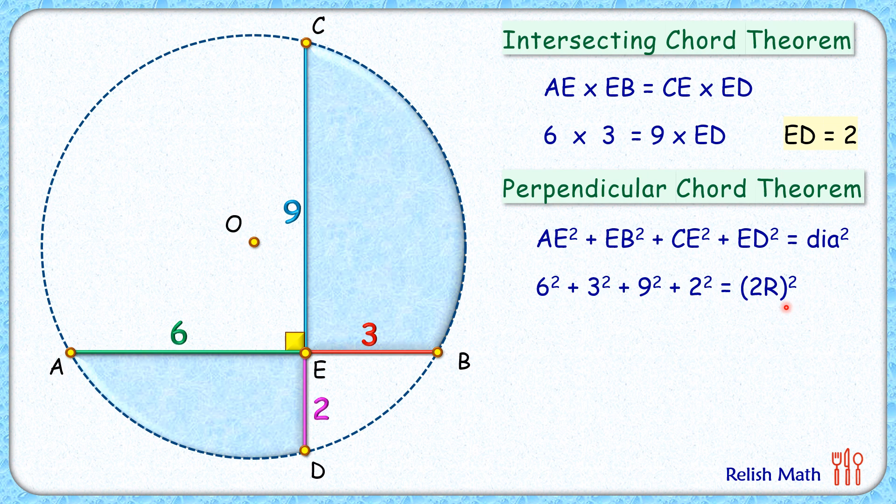And putting area of circle as πr², we'll get the area of this full circle as 65π/2 cm².